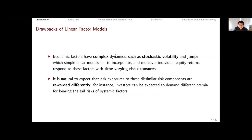There are two obvious limitations of linear factor models. The financial econometrics literature has documented complex dynamics of realized returns — stochastic volatility, jumps — which simple linear models fail to incorporate. Moreover, individual equity returns respond to factors with time-varying risk exposures, which is not convenient for linear models. It is also natural to expect that risk exposures to dissimilar risk components like volatility and jumps are rewarded differently. For instance, investors may demand different premium for bearing tail risks — momentum crash would be one such tail risk.